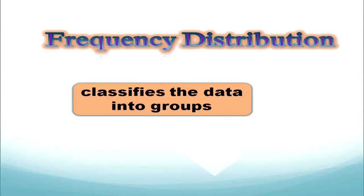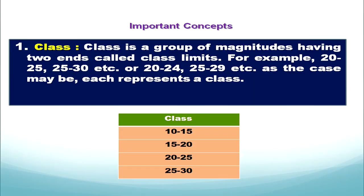Let's start with the class. In the previous chapter we have learned about frequency arrays. We know that in frequency arrays the data is ungrouped. To group the data we need to make frequency distribution. Frequency distribution classifies the data into groups. For example, suppose your teacher wants to know how many students have got marks between 20 to 30 — in this case we need to make a frequency distribution. Before discussing the methods of constructing frequency distribution, we must know certain important concepts.